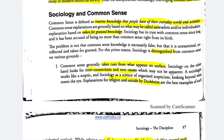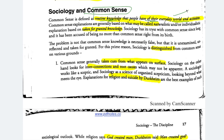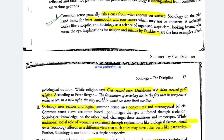Now the last topic of our first chapter: sociology and common sense. Common sense is routine knowledge that people have of their everyday world and activities — it is our daily knowledge. Sociology, as a scientific study of society, is distinguished from it. Common sense generally takes cues from what appears on the surface without thinking much deeper, whereas sociology looks for interconnections and root causes.